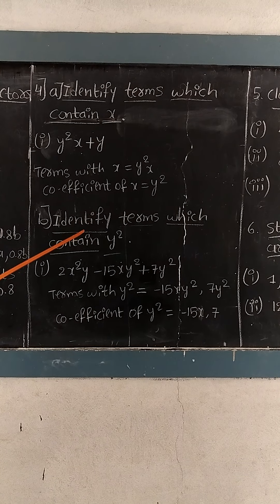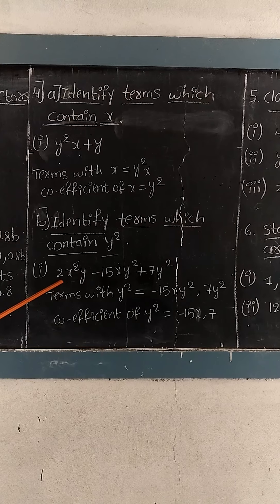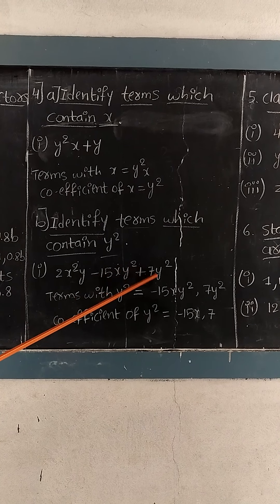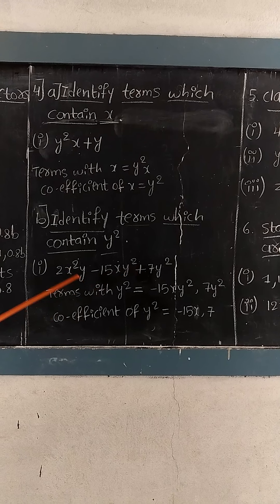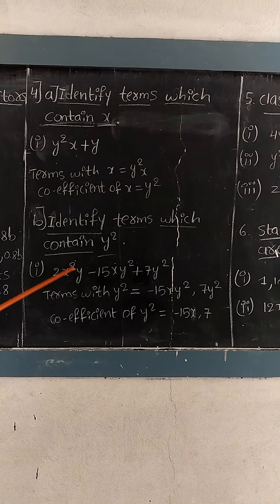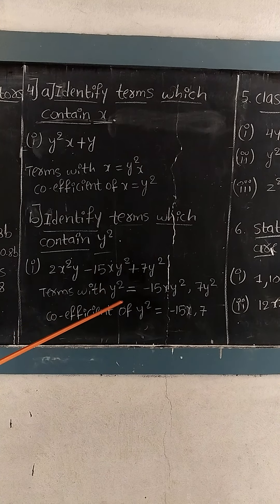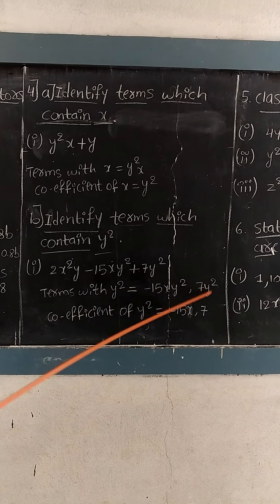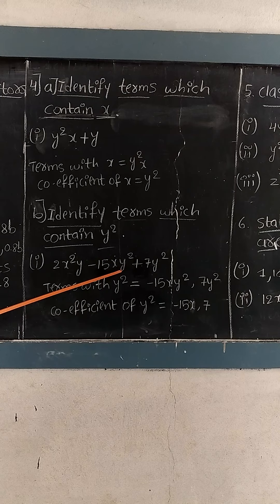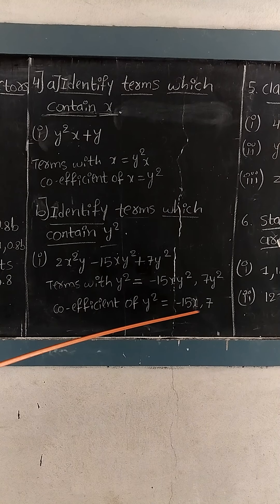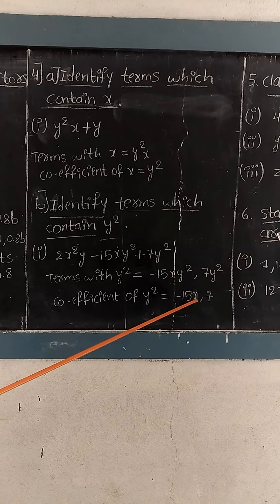Similarly, identify terms which contain y squared and write the coefficient of y squared. First question: 2x squared y minus 15xy squared plus 7y squared. In this expression we have three terms, but only two terms contain y squared — minus 15xy squared and 7y squared. The first term 2x squared y has only one y so we cannot count it. The coefficient of y squared in minus 15xy squared is minus 15x, and in 7y squared it is 7.